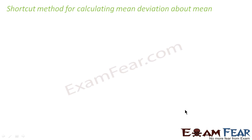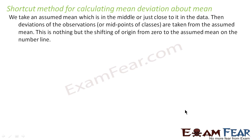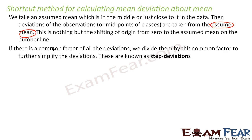Till now what we have seen is to find mean deviation about mean, the first thing was to find the mean, and that itself was a challenging task. If you have huge data it takes time to find the mean. So here, instead of finding the mean, we'll just assume the mean. This is the shortcut method. We take the midpoint of the data and say that it's the assumed mean.